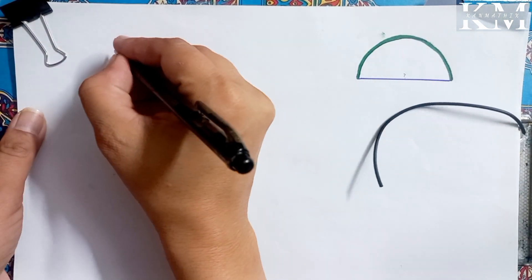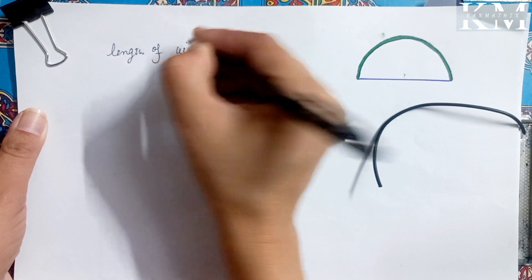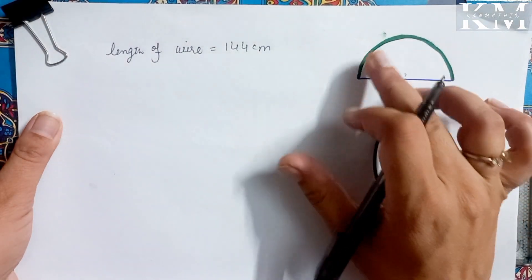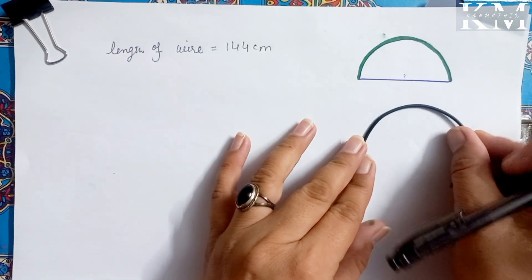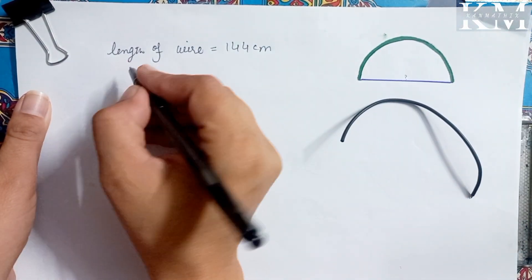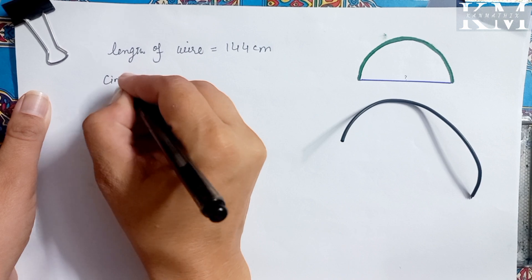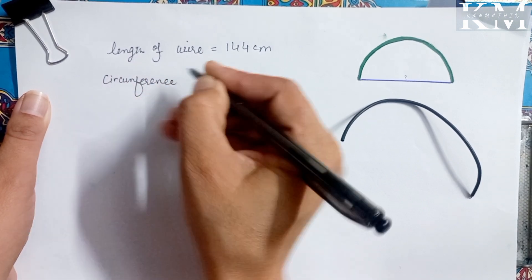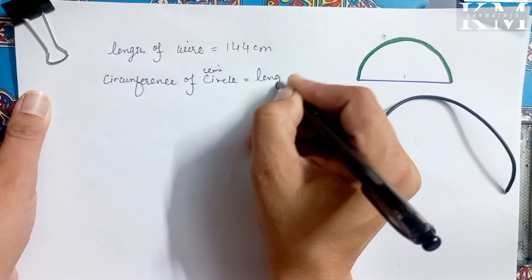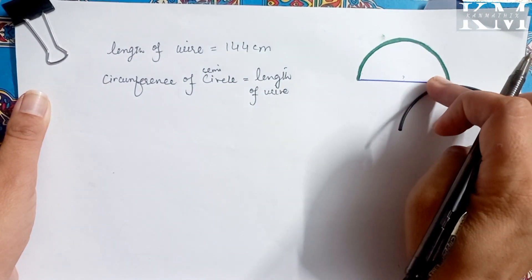Let's make a sketch. The length of the wire given is 144 centimeters — this is the only information which we have been given. After bending, we have to find the diameter because it has become a semi-circle. The length of this wire will be called the circumference, meaning the circumference of the semi-circle equals the length of the wire. Circumference is the measurement of the boundary, so length of the wire and circumference of the semi-circle are the same thing.